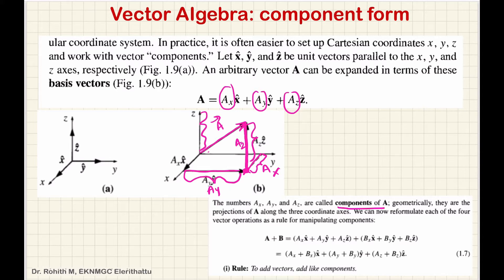Suppose we have to add two vectors, a and b. Vector A has components ax, ay, az and vector B has components bx, by, bz. So you will get (ax + bx) x-cap plus (ay + by) y-cap plus (az + bz) z-cap. You will get the sum of two vectors.